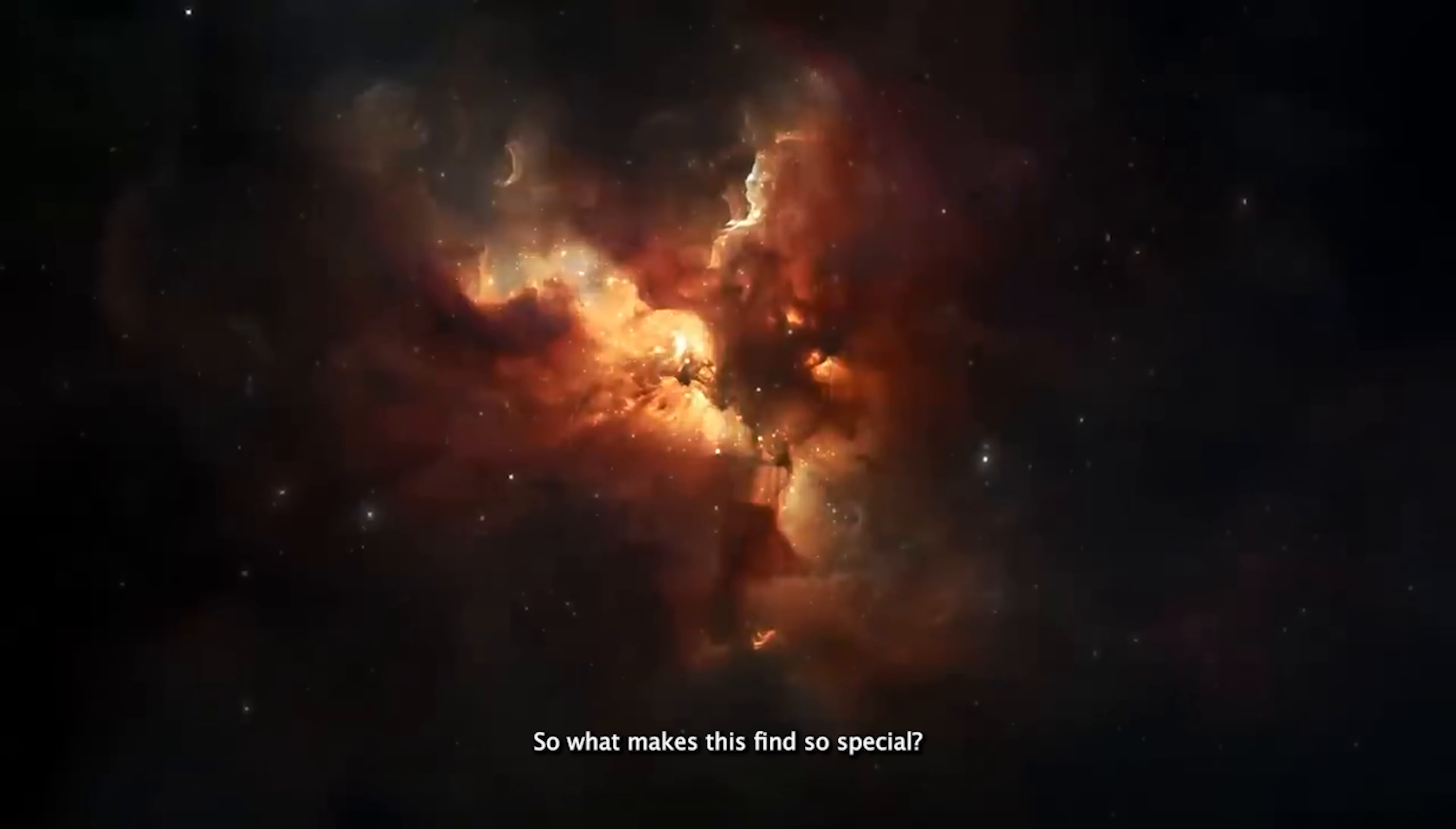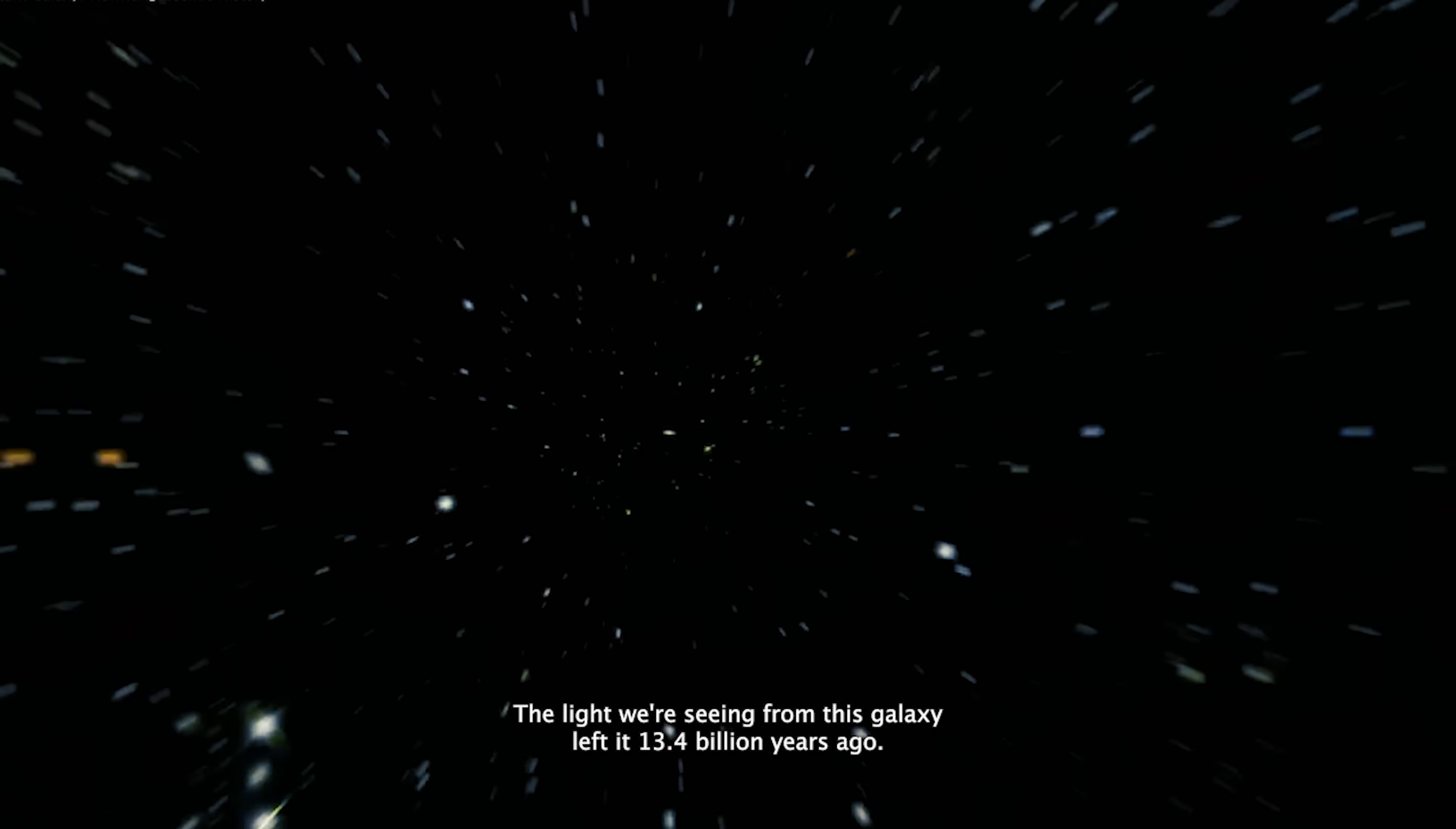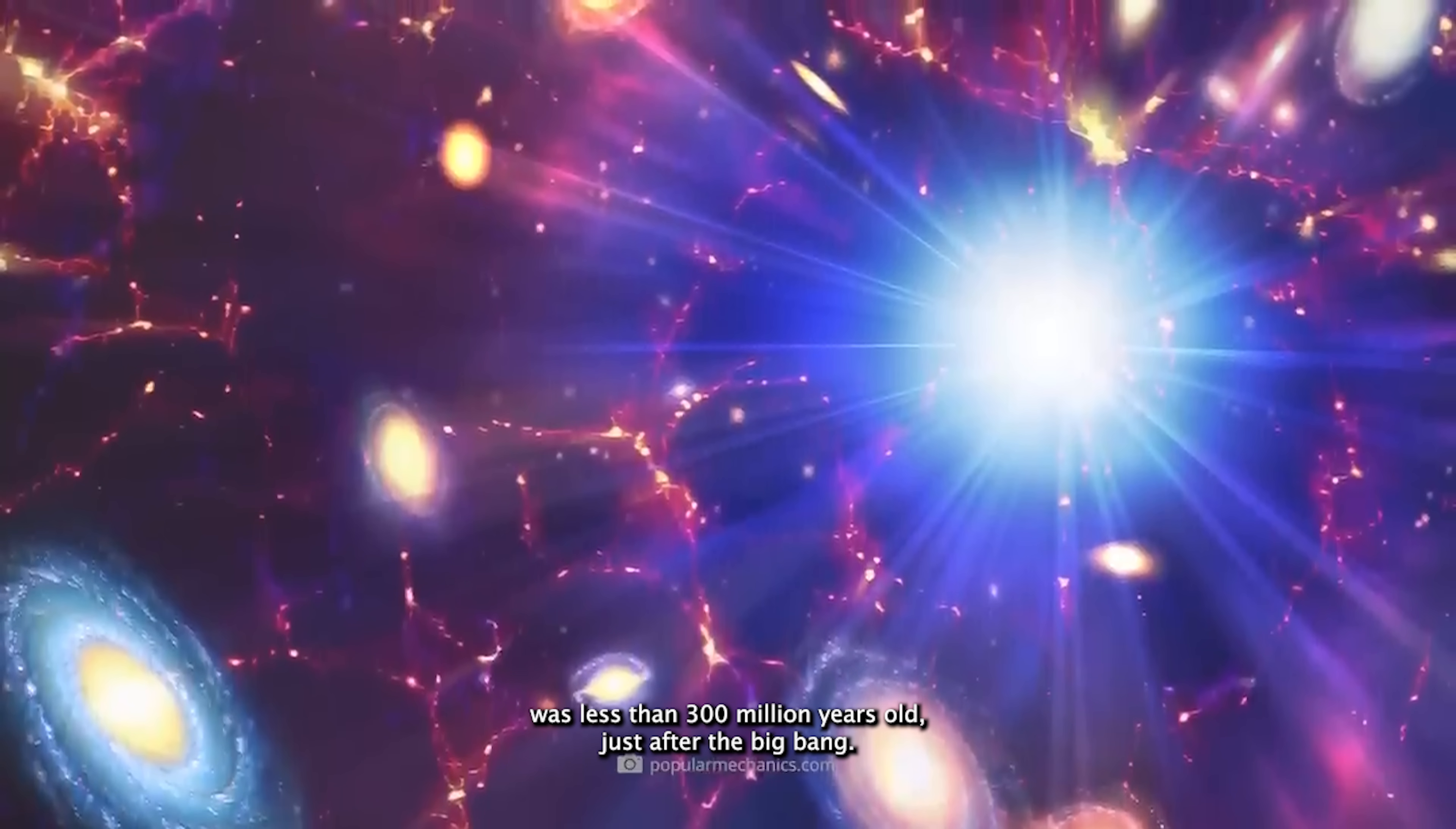So what makes this find so special? Jade's GSC 14-0 now holds the title of the farthest confirmed galaxy ever seen, sitting in the Fornax constellation. But here's where it gets really wild. The light we're seeing from this galaxy left it 13.4 billion years ago. Those photons have been racing through the expanding universe for billions of years before finally landing in our telescopes. Essentially, we're looking at this galaxy as it appeared when the universe was less than 300 million years old, just after the Big Bang.